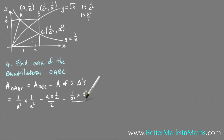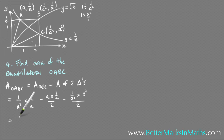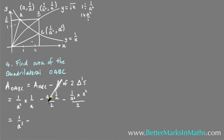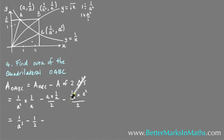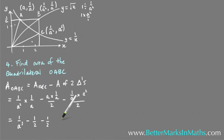Simplifying: the rectangle area becomes 1/a³. For the first triangle, a times 1/a cancels to give 1/2. For the second triangle, 1/a² times a² equals 1, giving 1/2. So the total area of OABC equals 1/a³ minus 1/2 minus 1/2, which equals 1/a³ minus 1. That's the expression for the area.